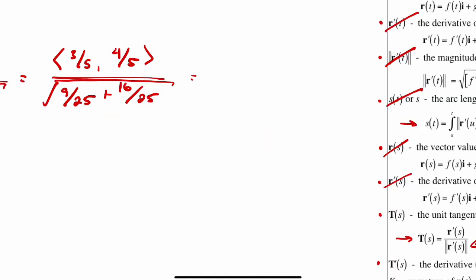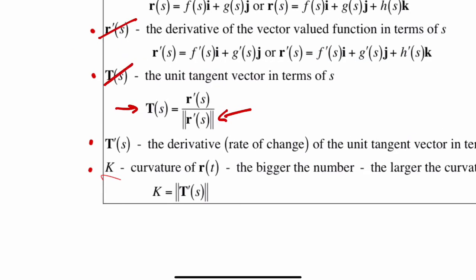Then the denominator is just going to be 1, so this is going to be equal to 3/5 comma 4/5. That is our T(s) done.